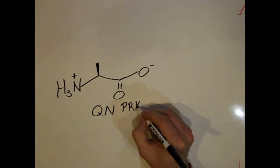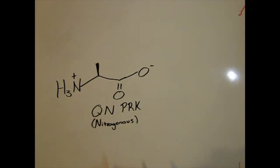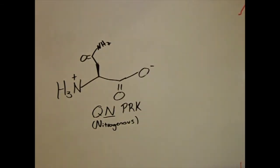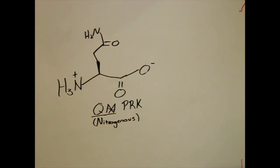The next group is queen and prince K. We use queen amine and prince K to remember these nitrogenous amino acids. This is asparagine. Asparagine is an amide. The second is glutamine. Glutamine is just like asparagine except it has an extra carbon. You can call it glutamine.